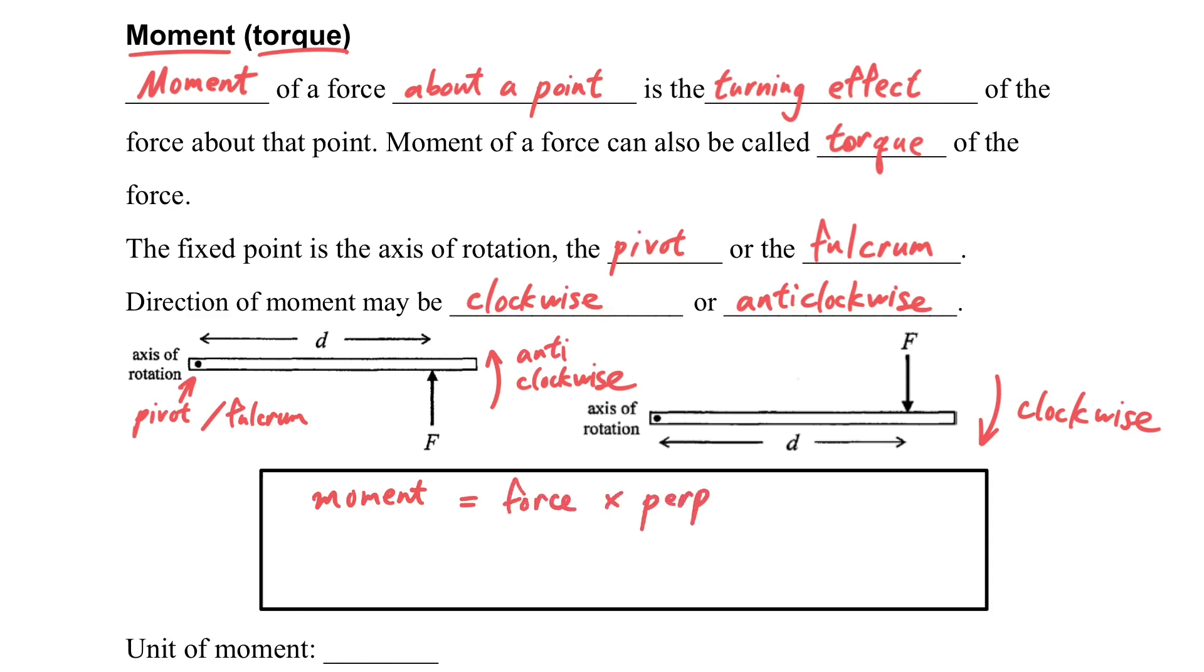Moment can be defined by the force times its perpendicular distance from a point. So make sure you're aware that it is a perpendicular distance. So torque is equal to F times d. Once again, it is a perpendicular distance.